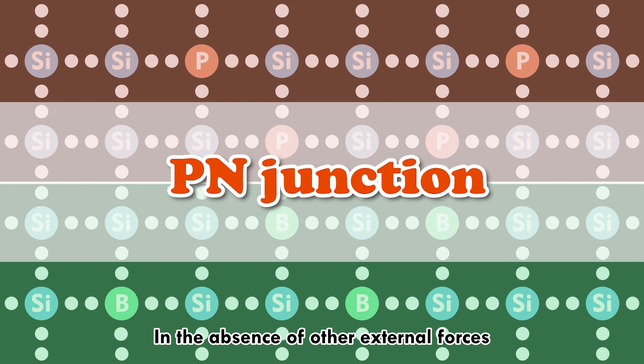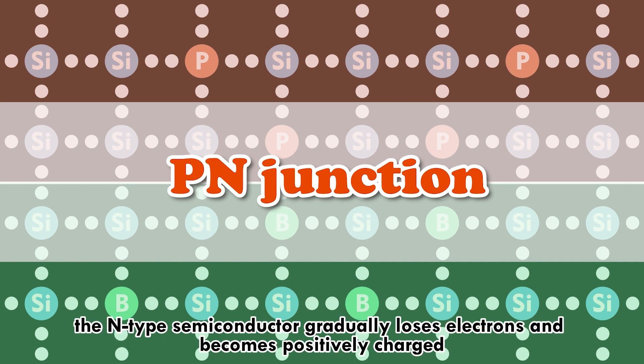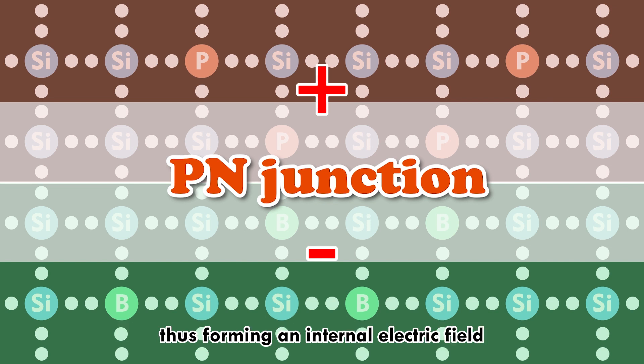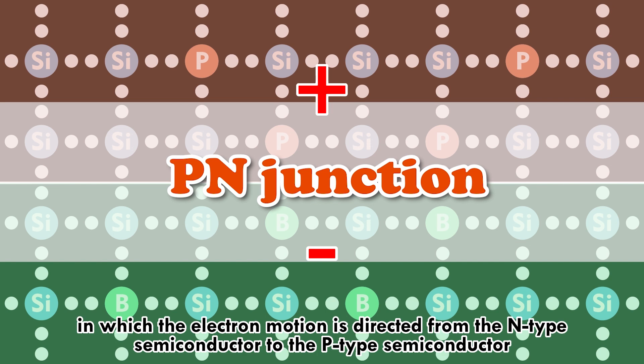In the absence of other external forces, the n-type semiconductor gradually loses electrons and becomes positively charged, while the p-type semiconductor gains electrons and becomes negatively charged. This forms an internal electric field in which the electron motion is directed from the n-type to the p-type semiconductor.